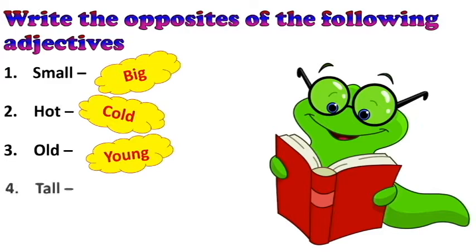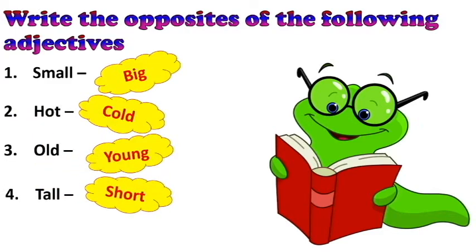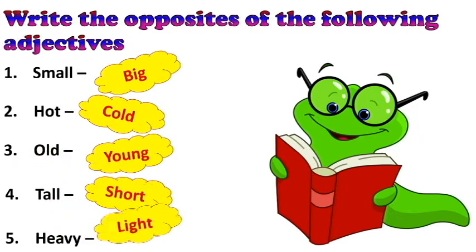Fourth one — tall. The opposite of tall is short. Fifth one — heavy. The opposite of heavy is light. You have completed the second activity.